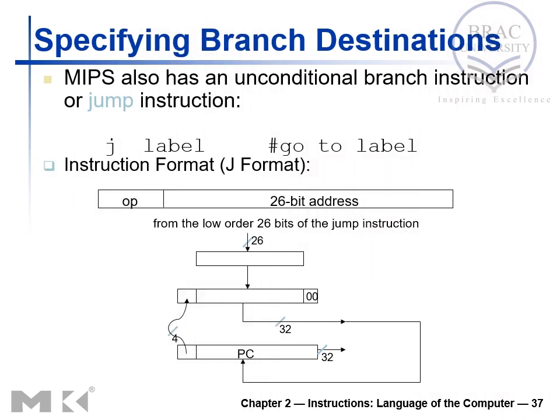In the previous slide we saw how to calculate the branch target address. In this slide we will look at the method of calculating the jump target address. Before going into the address calculation method, let me tell you that jump is an unconditional branch, which means if you see the instruction it's jump or J.